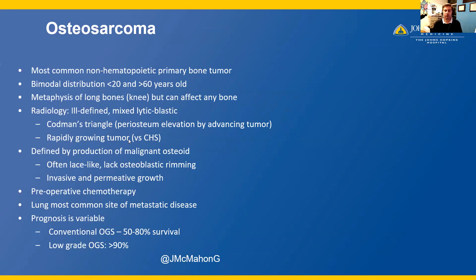Osteosarcomas generally grow rapidly, in contrast to conventional chondrosarcomas, which are a much slower and more indolent tumor. Osteosarcoma is defined by the production of malignant osteoid, which is often lace-like and lacks osteoblastic rimming. The majority of osteosarcomas require neoadjuvant or preoperative chemotherapy, though a couple of subtypes do not, which will be discussed in other videos. The lung is the most common site of metastatic disease. The prognosis is variable: conventional osteosarcoma has a 50–80% survival, while lower-grade osteosarcoma variants have a better prognosis with greater than 90% survival.